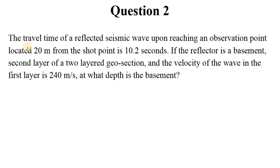Question 2: The travel time of a refracted seismic wave upon reaching an observation point located 20 meters from the shot point is 10.2 seconds. If the reflector is a basement, which is a second layer of a two-layer geo-section, and the velocity of the wave in the first layer is 240 meters per second, at what depth is the basement?